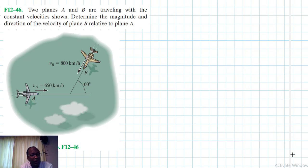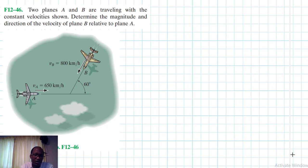Welcome to this screencast. The problem reads: two planes A and B are traveling with constant velocity. Determine the magnitude and direction of the velocity of plane B relative to plane A. This problem comes from Engineering Mechanics and Dynamics, 14th edition by Hibbeler.